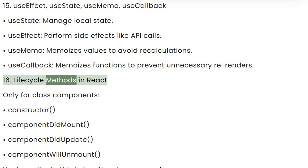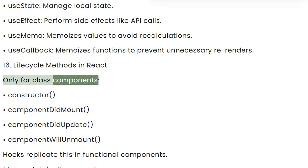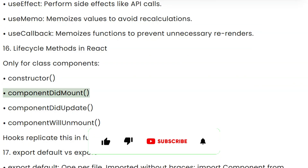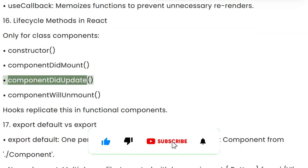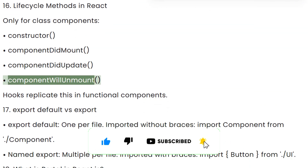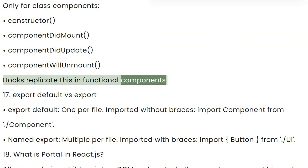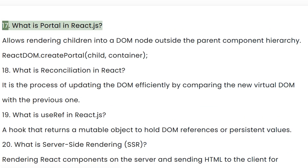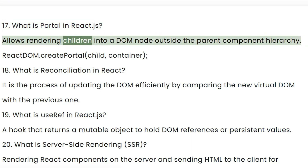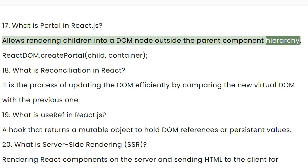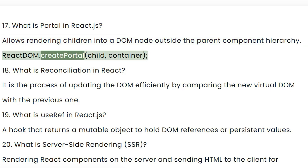Question 16: Lifecycle methods in React — only for class components: Constructor, componentDidMount, componentDidUpdate, componentWillUnmount. Hooks replicate this in functional components. Question 17: What is Portal in React.js? Allows rendering children into a DOM node outside the parent component hierarchy, using ReactDOM.createPortal.